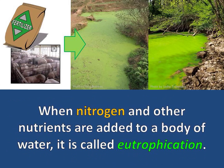When nitrogen and other nutrients are added to a body of water, it is called eutrophication. This literally means good nutrients have been added to the water, but the results are usually far from good.